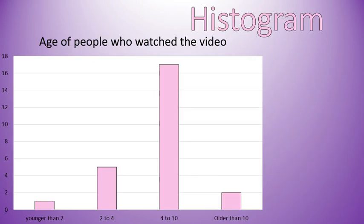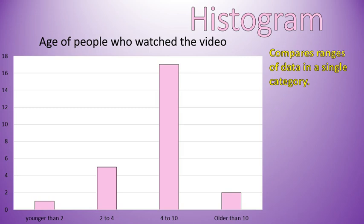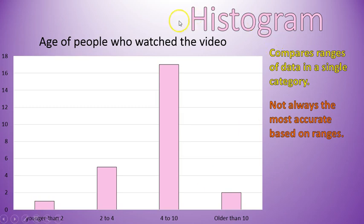Speaking of bar graphs, a histogram is a type of bar graph — specifically one that shows a range of data for a single category. So for example, the age of people who watched a certain video. Let's look at this one: there's only one person younger than two who watched this video, five people in the range of two to four, 17 people in the range of four to ten, and two people who were older than ten.